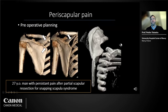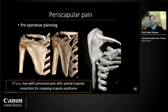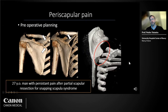This diagnosis allowed us to inject the patient with corticosteroids in the area of impingement, leading to improvement. Dynamic CT is also important for pre-operative planning in periscapular cases: in one patient with persistent pain after partial scapular resection, the dynamic study showed the impingement was occurring higher on the scapular bone — above the resected area. It was unfortunate that the dynamic study wasn't performed prior to surgery, which could have avoided resecting the suboptimal area.